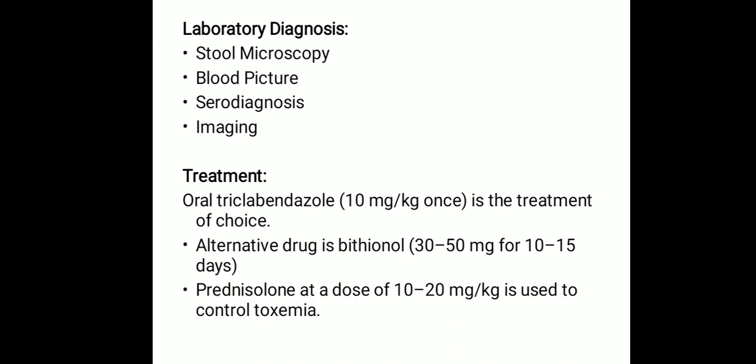For lab diagnosis, different methods can be used to detect this parasite, including stool microscopy, blood picture, serodiagnosis, and imaging. In stool microscopy, demonstration of eggs in feces or aspirated bile from the duodenum is the best method of diagnosis. The eggs of Fasciola hepatica and Fasciola buski are indistinguishable.